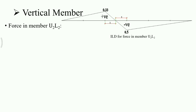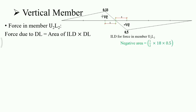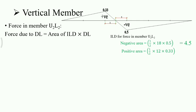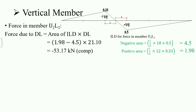Now, force in member U2L2 due to dead load. The area of the ILD: the negative area spans a length of 15 + 3 = 18 m, giving ½ × 18 × 0.5 = 4.5. The positive area has a base length of 12 m, giving ½ × 12 × 0.33 = 1.98. So (1.98 − 4.5) × 21.1 gives the dead load force as −53.17 kN, which is compressive.